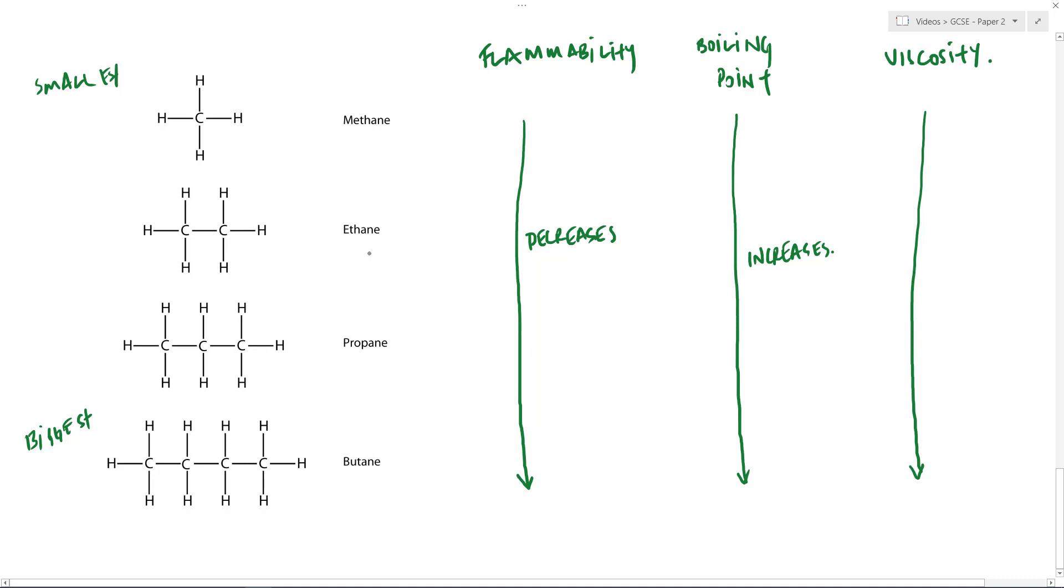So as we go down here, as our molecules get bigger, we find that our viscosity also increases. They become much more gloopy. Down the bottom, as I said, you'd have something that's more tar-like at 70, 100 carbons. At the top, methane is so not viscous, it's actually a gas. So the less viscous something is, the more like water it is, the more viscous it is, the more like honey it is.